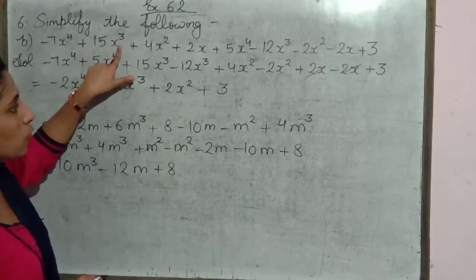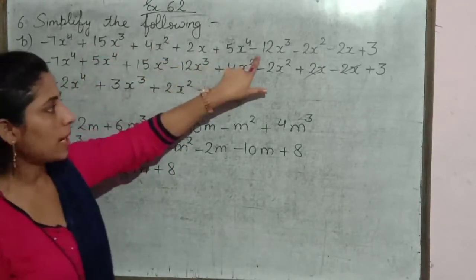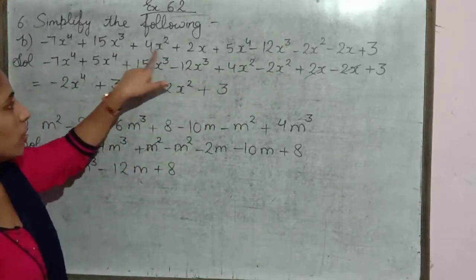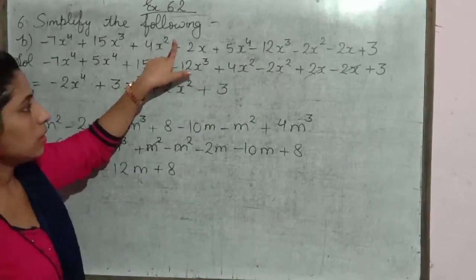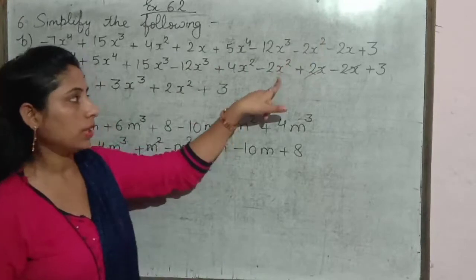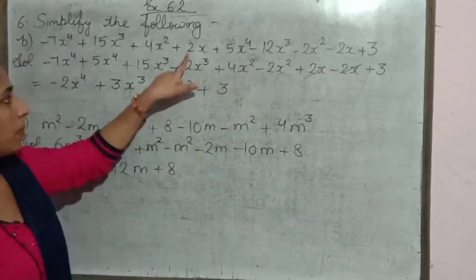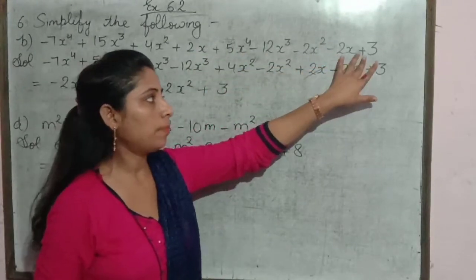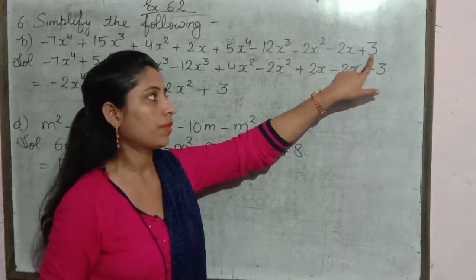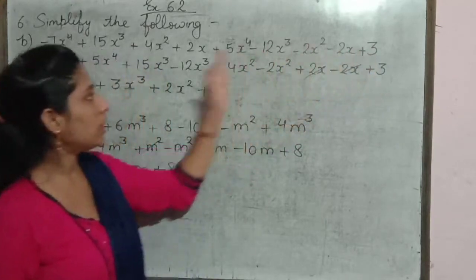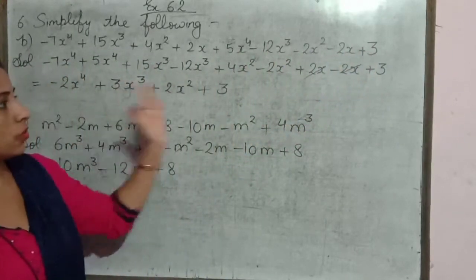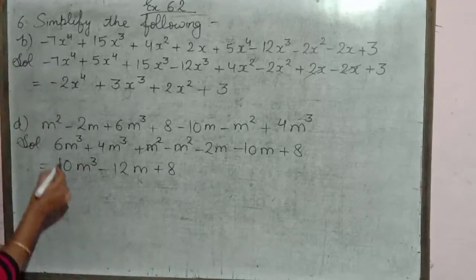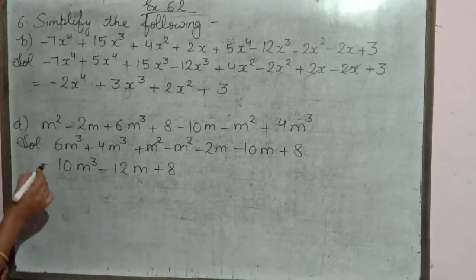Isi tarah se hum other terms ko bhi unki like terms ke saath write karenge. Plus 15x cube minus 12x cube. Then 4x square minus 2x square. Plus 2x minus 2x. And plus 3 — yahan par 3 ke saath koi aur like term nahi hai. Now we will solve it.